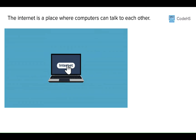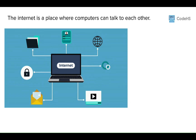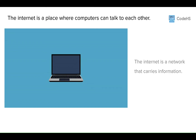Explained simply, we could say that the Internet is a place where computers can talk to each other. Messages are sent from one computer to another computer. The Internet is a network that carries and delivers this information.